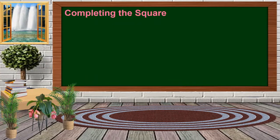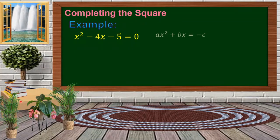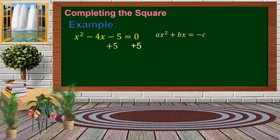The next method is completing the square. For example, x squared minus 4x minus 5. We transform it into the form x squared plus bx equal to negative c, by adding 5 on both sides. Negative 5 plus 5 equals 0, leaving x squared minus 4x equal to 5.